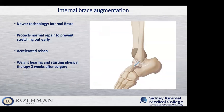Recently, there's something called an internal brace — think of it as a seat belt for the repair. It protects the repair early in the rehab process so it doesn't stretch out, allowing us to start rehab much sooner with earlier weight bearing and earlier return to activity. We used to wait about six weeks after this procedure before starting physical therapy and weight bearing. Now we typically start weight bearing and physical therapy at two weeks after surgery.